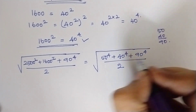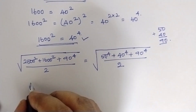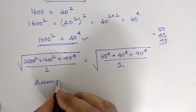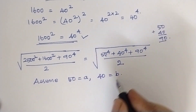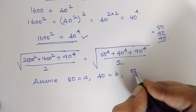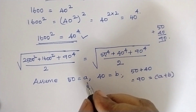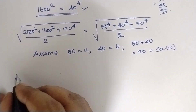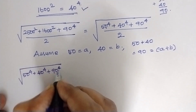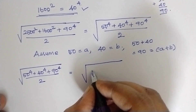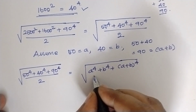Now if we look at these numbers — what is the relation between 50 and 40? If we add 50 and 40, we get 90. So let us assume A equals 50 and B equals 40. Then A plus B equals 90. Substituting these values, the question becomes: the square root of A to the power 4, plus B to the power 4, plus (A plus B) to the power 4, divided by 2.